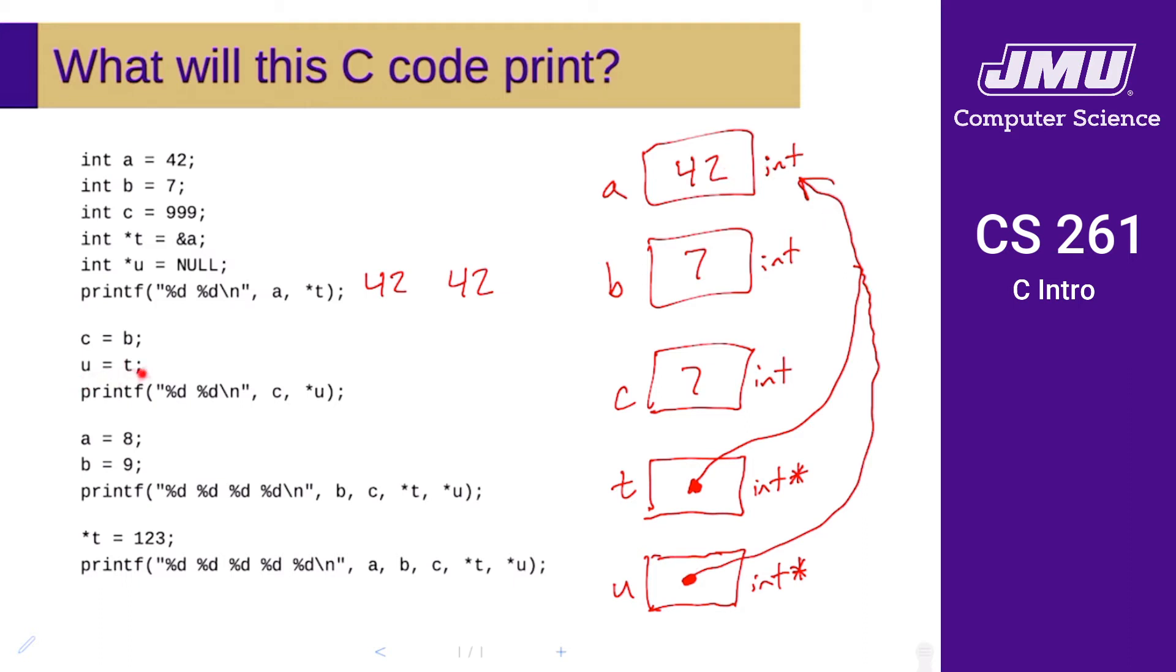Now when we print c here, we're going to be printing the new value of c, so that's going to be seven. Then we're going to dereference u here, and u is now a valid pointer that's pointing to a, so we're going to get 42.